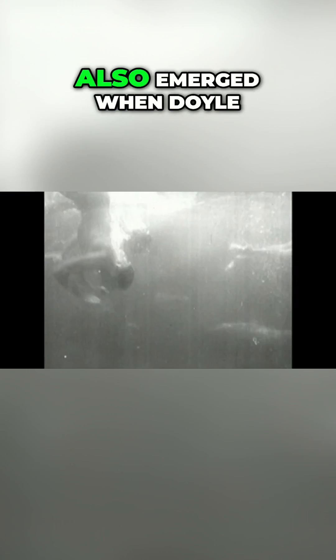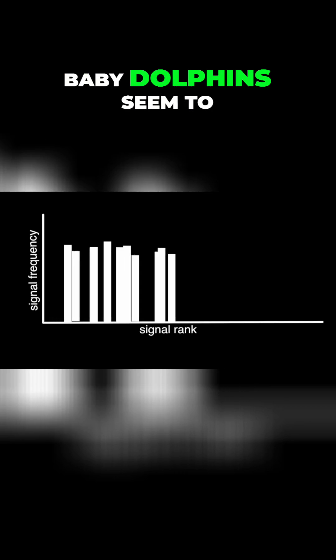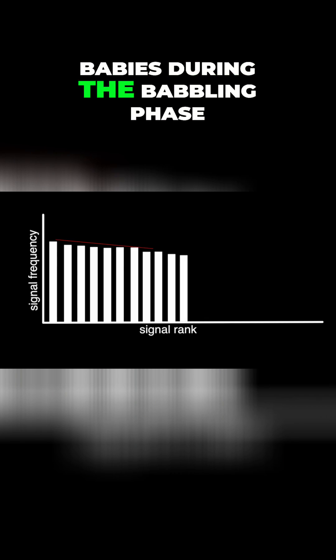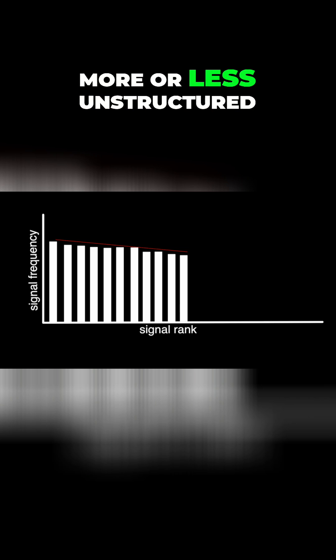And even more surprising is that this pattern also emerged when Doyle and McCowan analyzed non-human communication. They found that the whistle sounds produced by baby dolphins seem to be distributed in a pattern similar to human babies during the babbling phase. At first, the dolphin whistles are more or less unstructured.